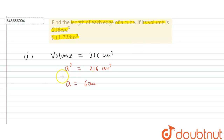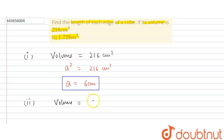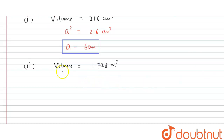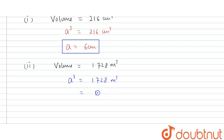Now we solve the second part, where the volume is given as 1.728 meter cube. Using the same formula, a cube equals 1.728 meter cube. We can write 1.728 as 1.2 raised to the power 3. So 1.2 raised to power 3 meter cube equals a cube, and therefore a is equal to 1.2 meters.